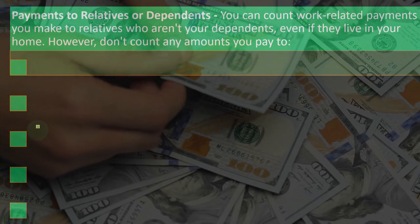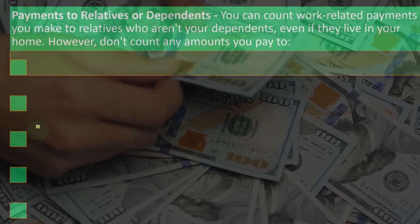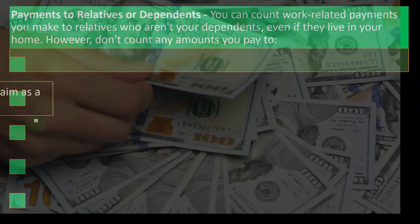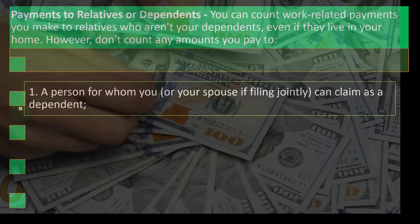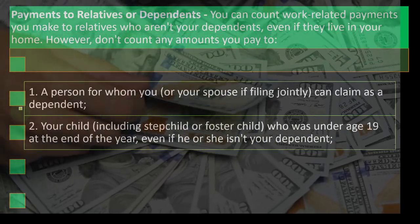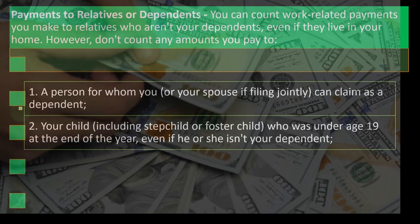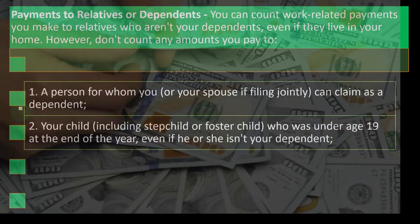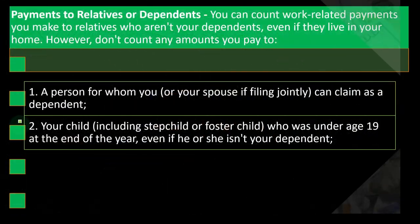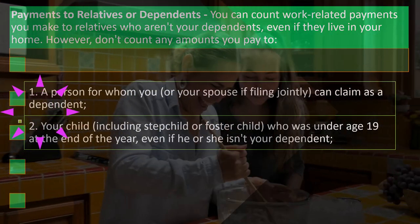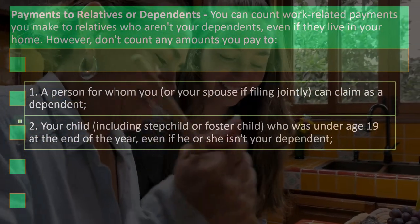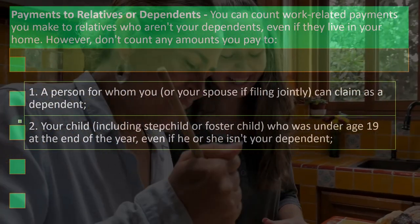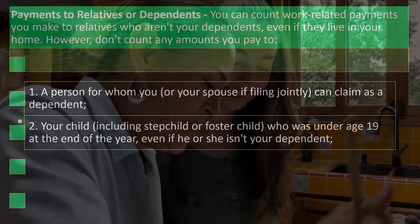Payments to relatives or dependents: you can count work-related payments you make to relatives who aren't your dependents, even if they live in your home. However, don't count any amounts you pay to: one, a person whom you or your spouse (if filing jointly) can claim as a dependent; two, your child — including stepchild or foster child — who was under age 19 at the end of the year, even if he or she isn't your dependent.